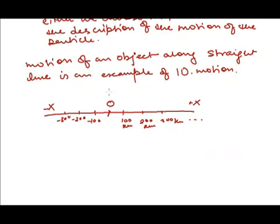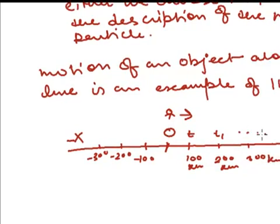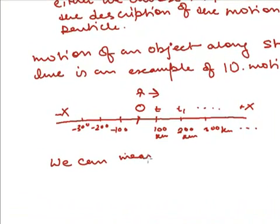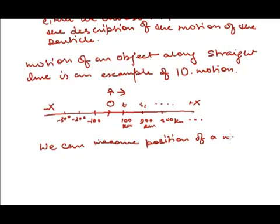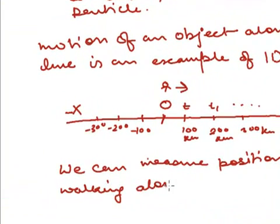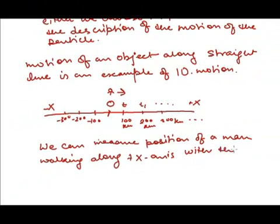Suppose a man walks along positive x-axis. At time t, the man is at distance 100 kilometers from the origin. At t1, it is at 200 kilometers and so on. So, we can measure position of a man walking along positive x-axis with the passage of time.